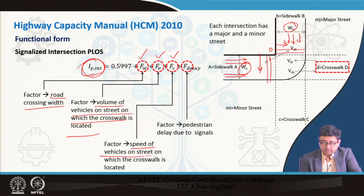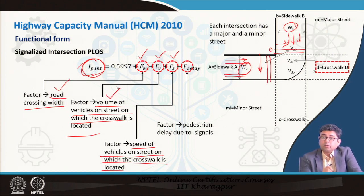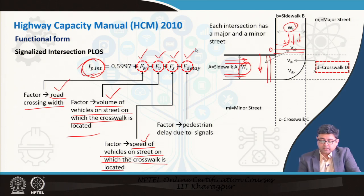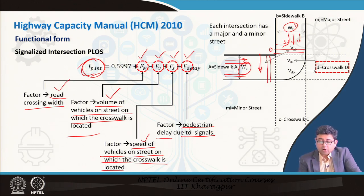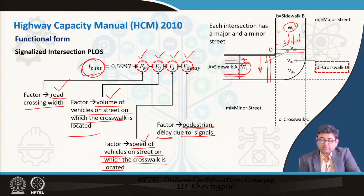The third factor is Fs — the speed of the vehicles on the street on which the crosswalk is located. You have to know the width of that road, the volume of vehicles, and the speed of vehicles. Finally, the fourth factor is the delay faced by pedestrians if there is a signalized intersection. If pedestrians have to wait due to a signal — whether a pedestrian signal or a regular vehicle signal — you must calculate the delay incurred by pedestrians at that intersection.